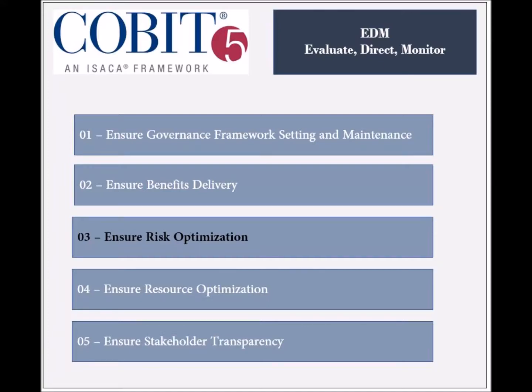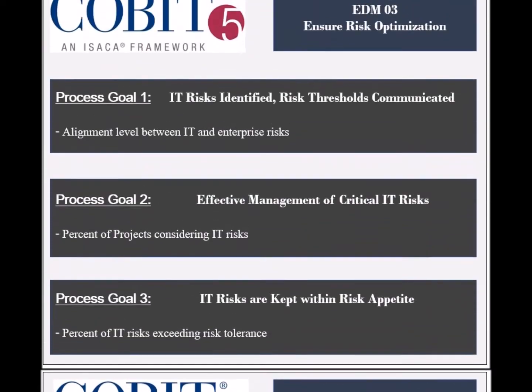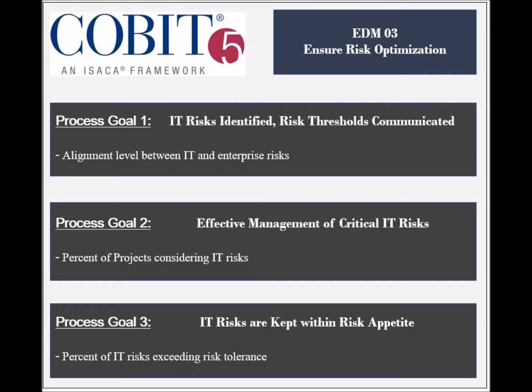The third process of the EDM domain, Ensure Risk Optimization, has three process goals. The first goal is to ensure that key IT risks are identified and that risk thresholds are communicated. The achievement of this goal is measured by the level of alignment between IT and business risks, and by the number of potential IT risks identified.